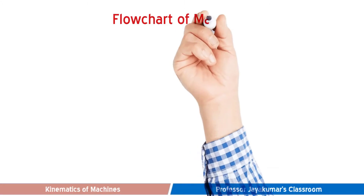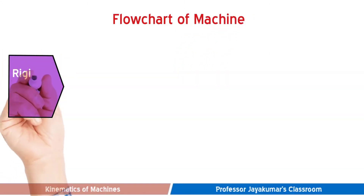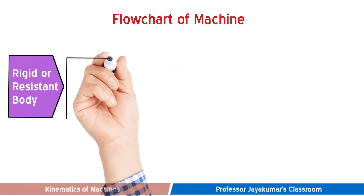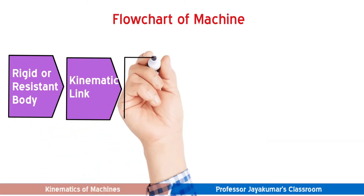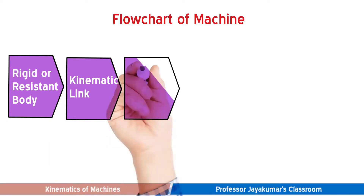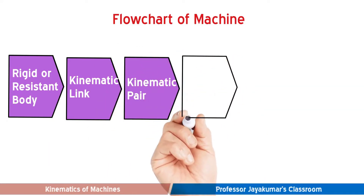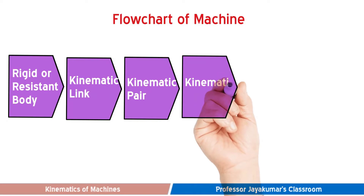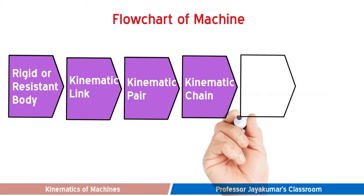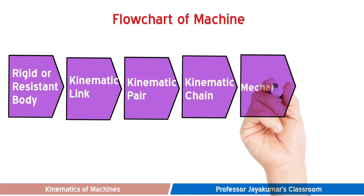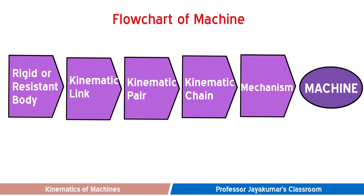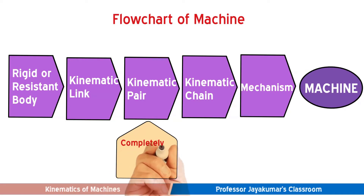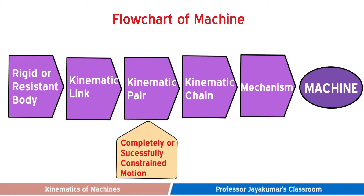In the flowchart of machine, we have already discussed about kinematic links and their types in our previous video. A joint of two links will form a kinematic pair. A kinematic pair should result into a completely or successfully constrained motion. So in this video, we will be talking about different types of constrained motions and different types of kinematic pairs.